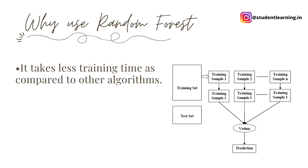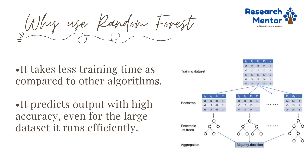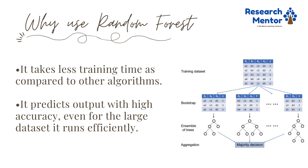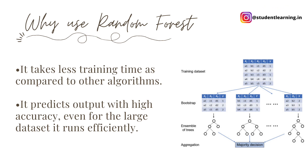Why should we go for random forest? The answer is simple and clear. It takes less training time compared to other algorithms in machine learning like KNN and decision trees. It predicts output with high accuracy, and even for large datasets it runs very efficiently. We can see in this diagram there is a huge training dataset divided into a number of data points. With those data points we create multiple trees, and then decide the final prediction on the basis of voting or majority.